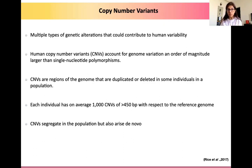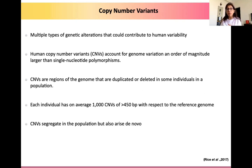Copy number variants account for genome variation of an order of magnitude larger than single nucleotide polymorphisms. These are essentially regions that are duplicated or deleted in some individuals in a population — chunks of your chromosome which could be deleted or duplicated. Each individual on average has 1,000 CNVs of about more than 450 base pairs with respect to the reference genome. Like SNPs, CNVs could also segregate in a population but can also arise de novo.